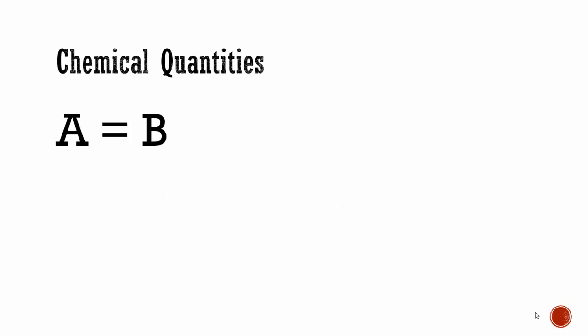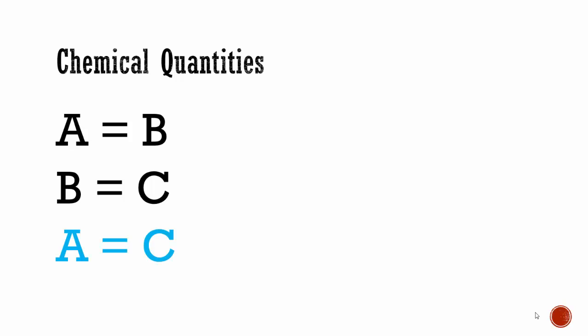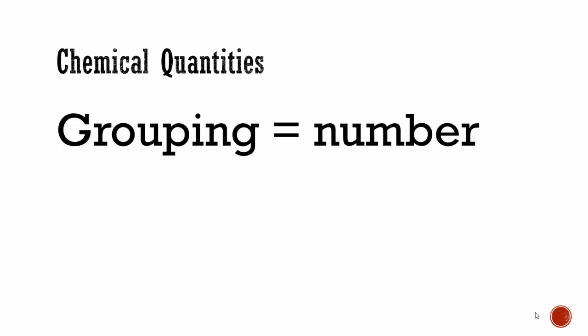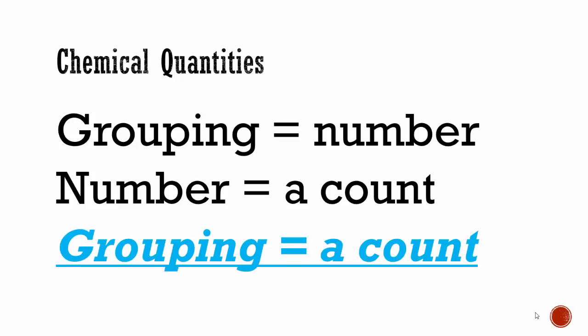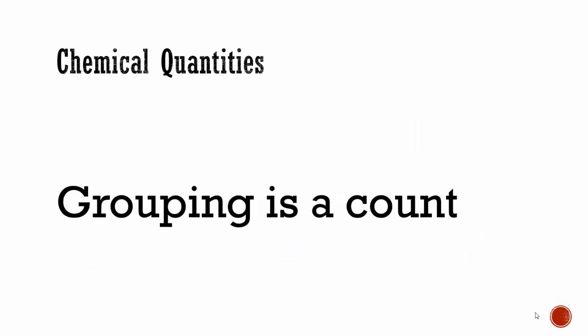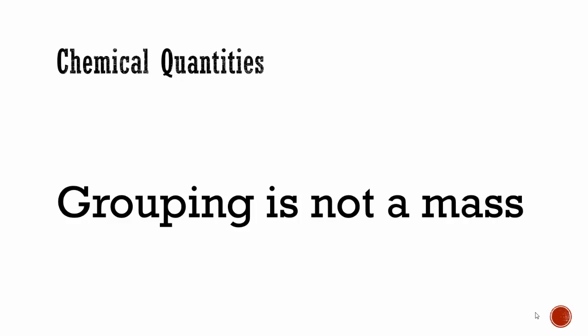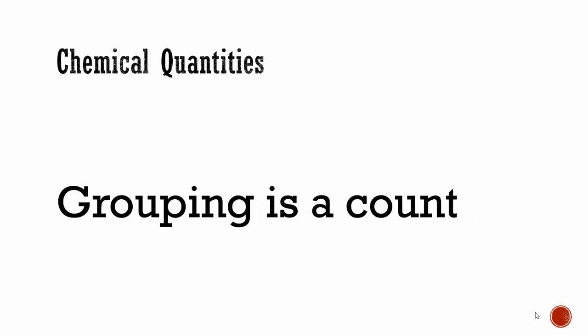Going back to basic math: if A equals B, and B equals C, then A equals C. So if a grouping is a number, and a number is a count, then a grouping is a count. Grouping is a count — it's not a mass, it's not a volume, it is simply a count.